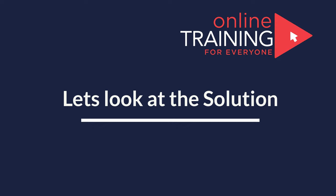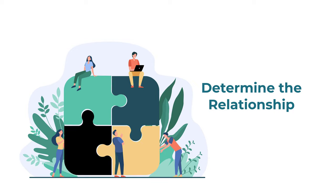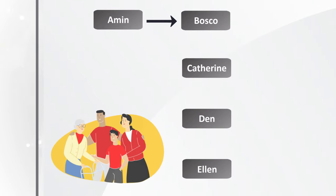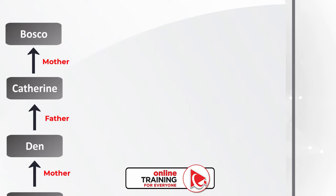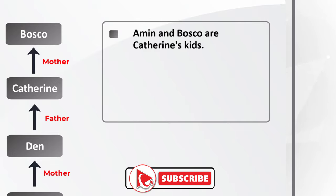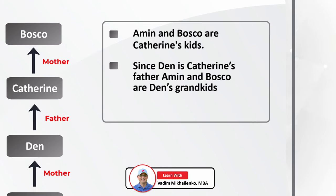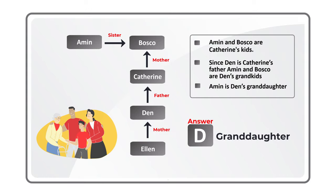I am going to move forward, reveal the answer, and explain how I got to the solution. If you have a better way to solve it, please make sure to share in comments. The easiest way to determine this multigenerational relationship in the family is to build a diagram. Amin is Baska's sister. Catherine is Baska's mother. Dan is Catherine's father. And Alan is Dan's mother. Amin and Baska are Catherine's children. Since Dan is Catherine's father, Amin and Baska are Dan's grandkids, which means Amin is Dan's granddaughter. So the correct choice here is Choice D: granddaughter.